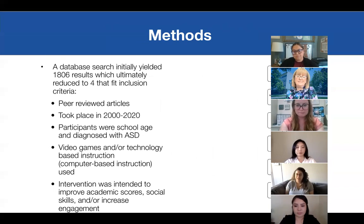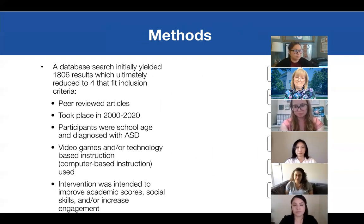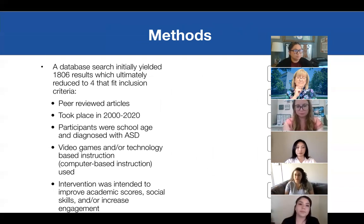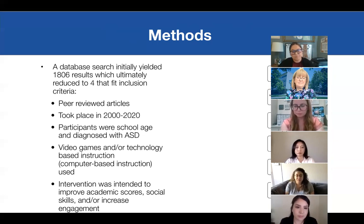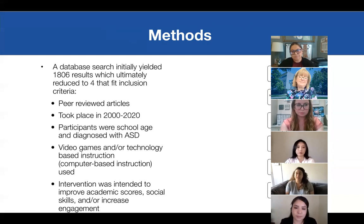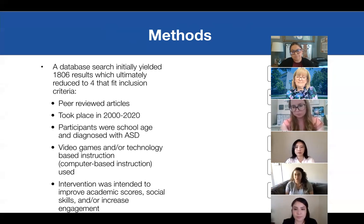Looking at the research, a database search started off with 1,806 results. After going through different inclusion criteria — starting with peer-reviewed articles, then those taking place between 2000 and 2020 — participants needed to be school-aged with a diagnosed ASD. The search also looked for video games and/or technology-based instruction, interchangeably called computer-based instruction, used in the classroom. The intervention had to improve or be intended to improve academic scores, social skills, and/or increase engagement. This resulted in four studies.